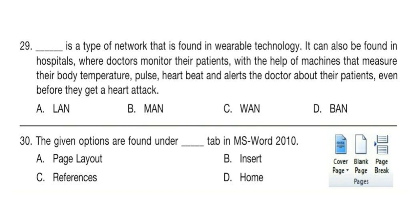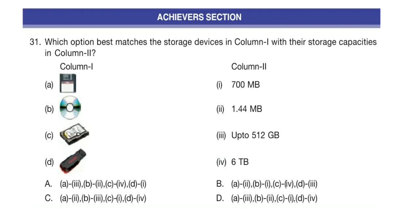Question 30. The given options are found under dash tab in MS Word 2010. Now comes the Achiever section. Each question carries two marks.